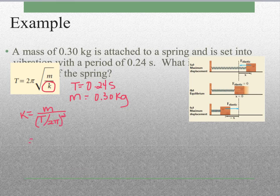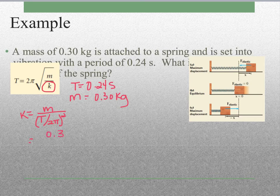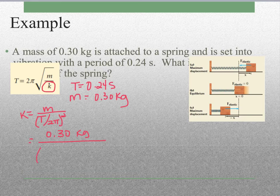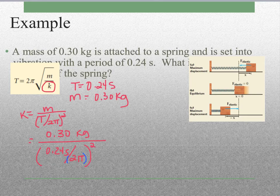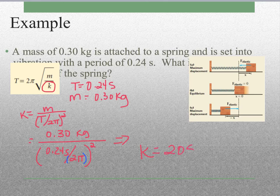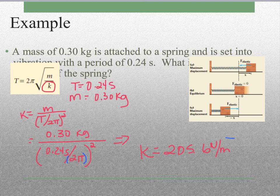Now if we plug in our information, we've got our mass of 0.30 kilograms divided by our period, 0.24 seconds, divided by 2π. Again, make sure you're putting all your parentheses in the correct place in your calculator. When we plug all of that in, we end up with k being equal to 205.6 newtons per meter. Now you should be able to solve for the period of either a mass and spring system or a pendulum.